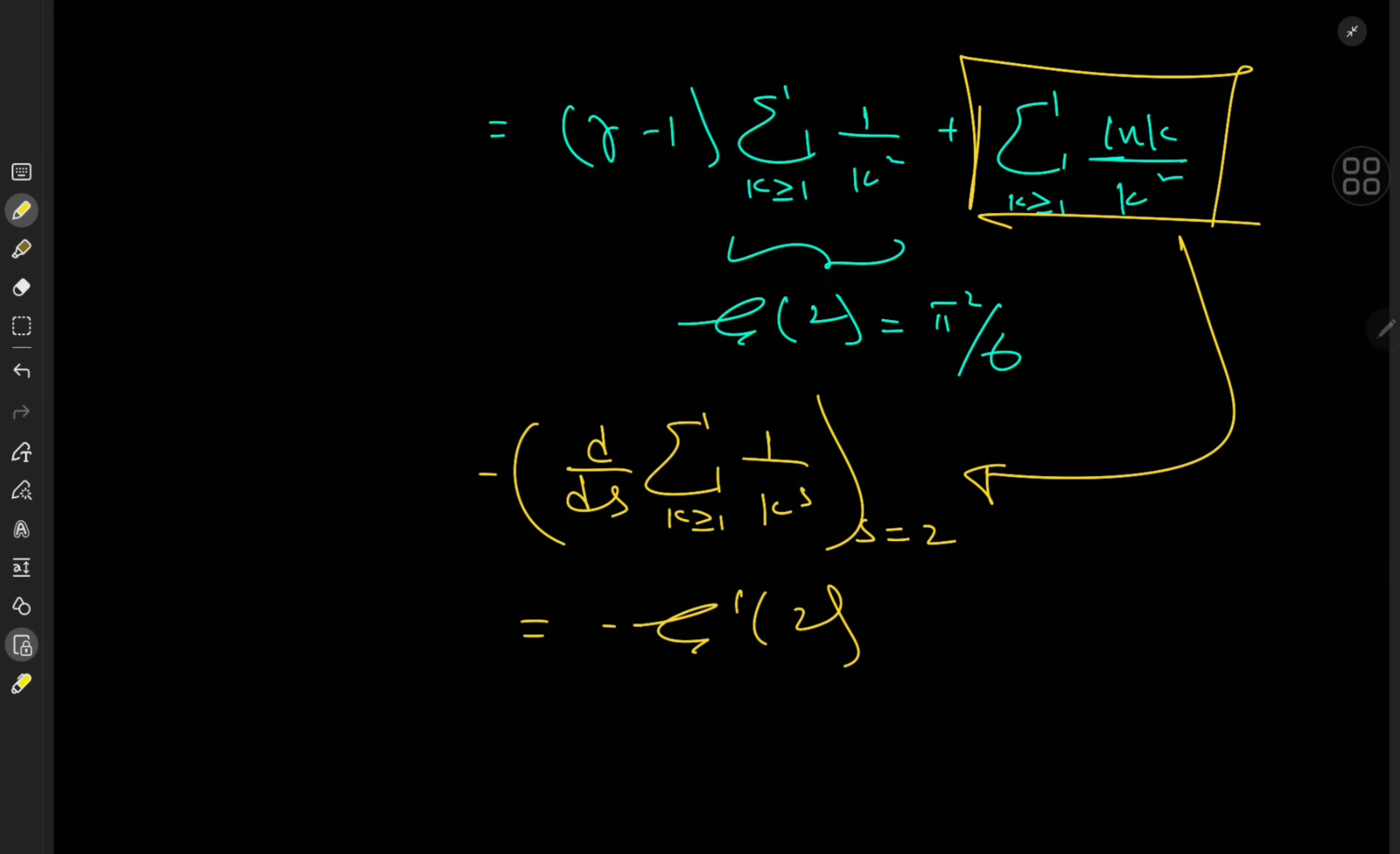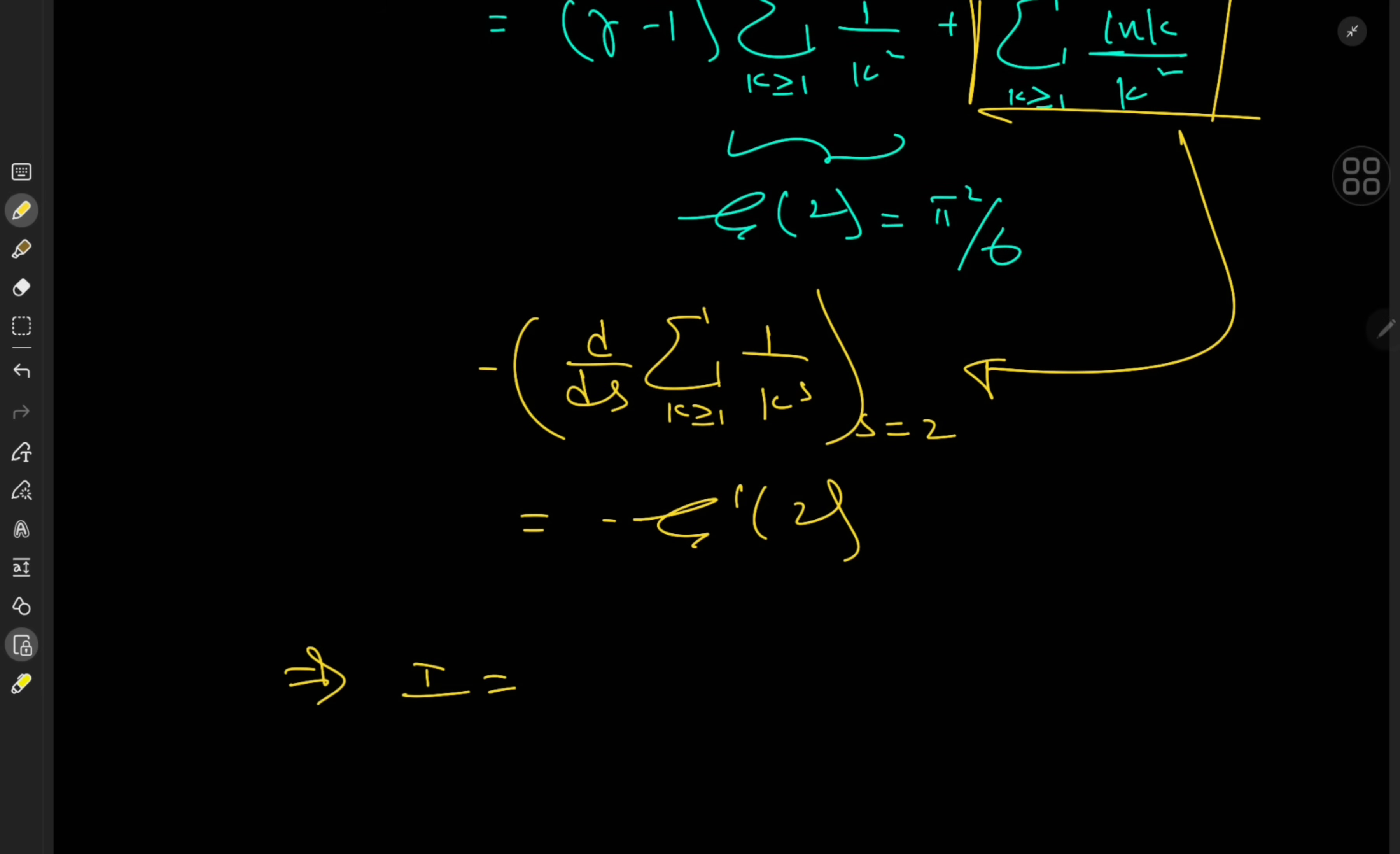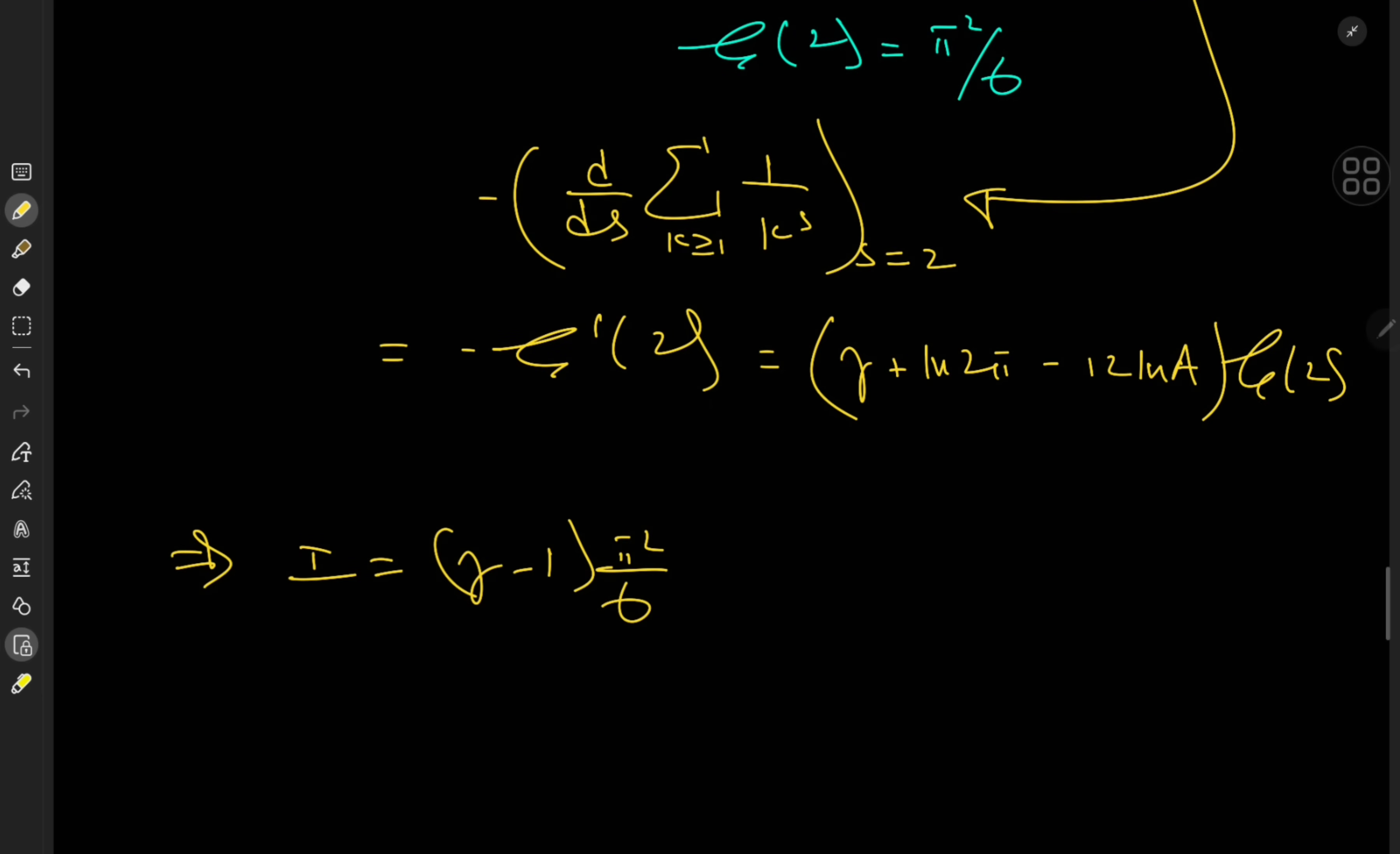So we have zeta 2, and we have zeta prime of 2, which is another Pandora's box that I really should make a video about. Anyway, today it will suffice to actually just reference it. But I will make a future video. And in case I forget, do keep reminding me in the comment section. Anyway, so we have gamma minus 1 times pi squared over 6. And zeta prime of 2 is actually interesting in that it is also related to zeta 2 itself. And in fact, quite a few constants. So it's actually equal to the Euler-Mascheroni constant plus log 2 pi minus 12 times the logarithm of another very special constant A called the Glaisher-Kinkelin constant times zeta 2, which is just pi squared over 6.